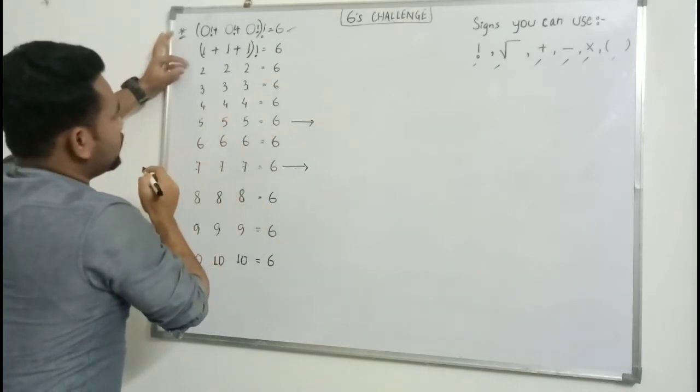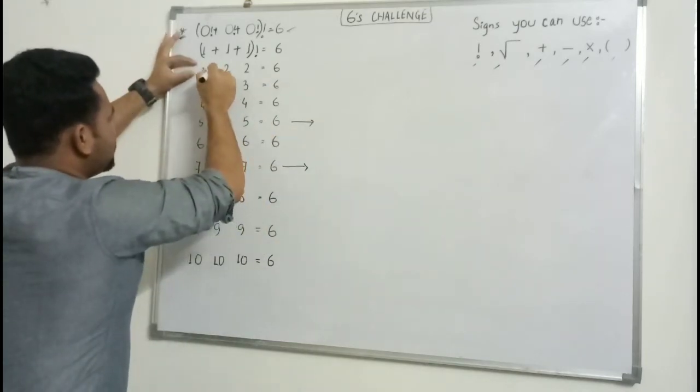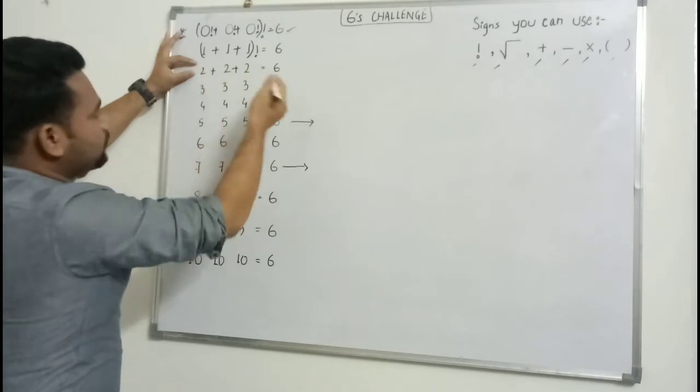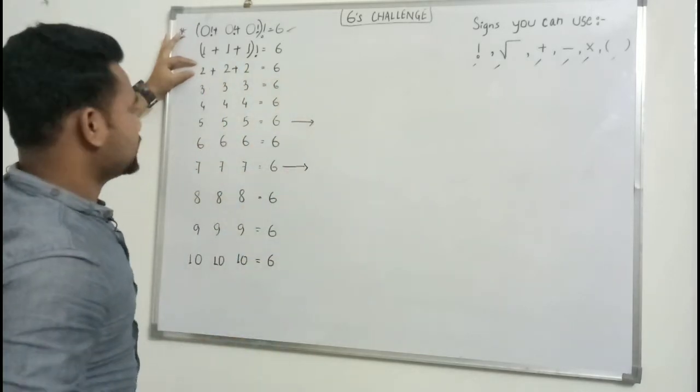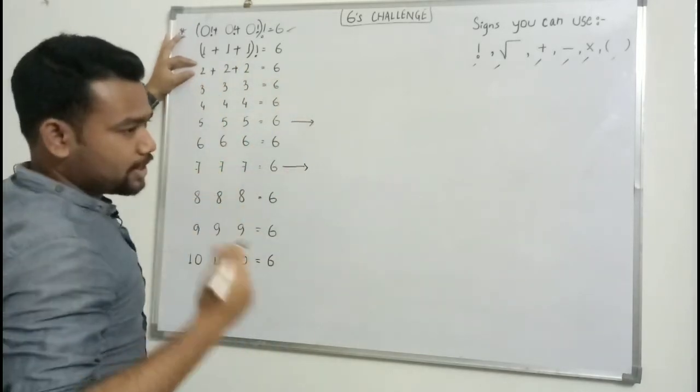Let's go for the third one - two. Two plus two plus two is six, so easy. Three, how can we do it?